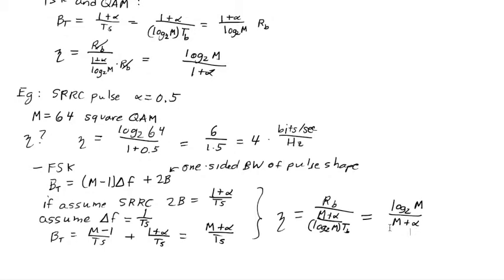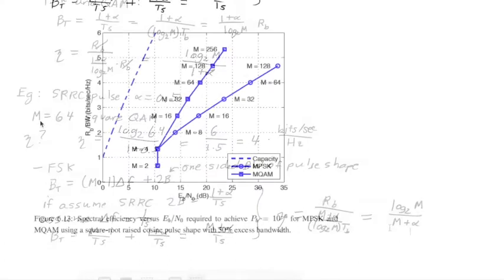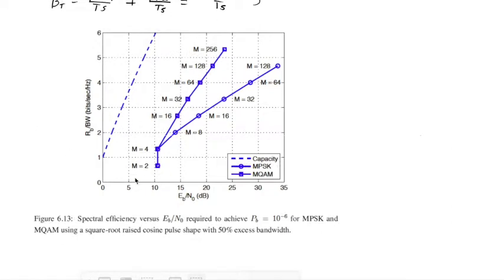So let's plot the results. A plot from the Rice book has the x-axis be the eb over n0. That is, here it's the eb over n0 required to achieve a probability of bit error of 10 to the minus sixth. So a very low probability of bit error. So it's a high fidelity digital communication system. On the y-axis, it's the bits per second per hertz. And this is the typical way we can compare modulations in terms of bandwidth efficiency.